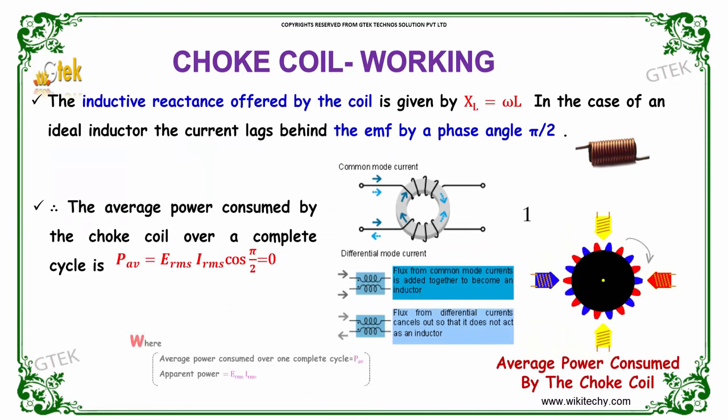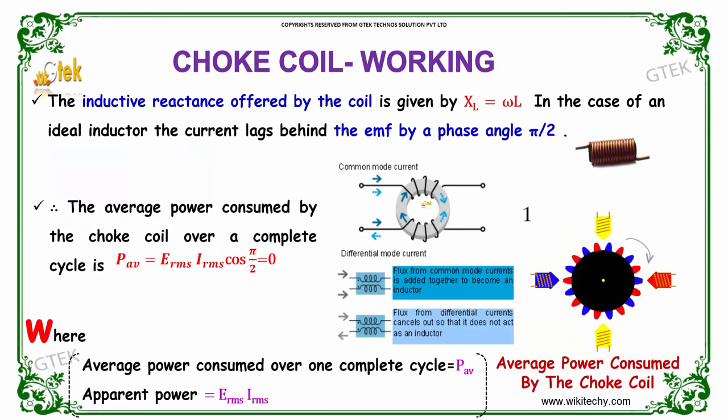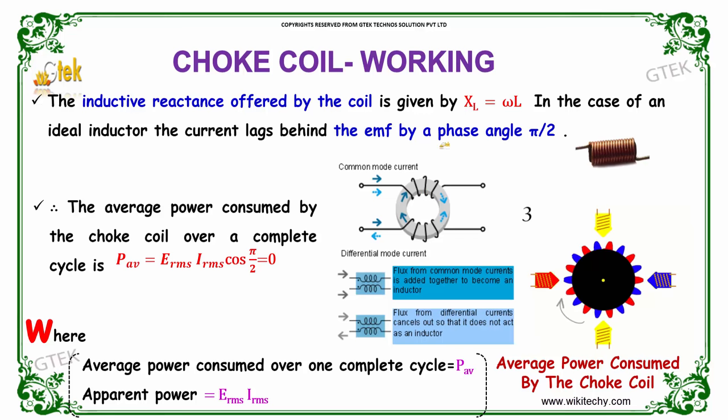The inductive reactance offered by the coil is given by X_L = ωL. In the case of an ideal conductor, the current lags behind the EMF by a phase angle of π/2.